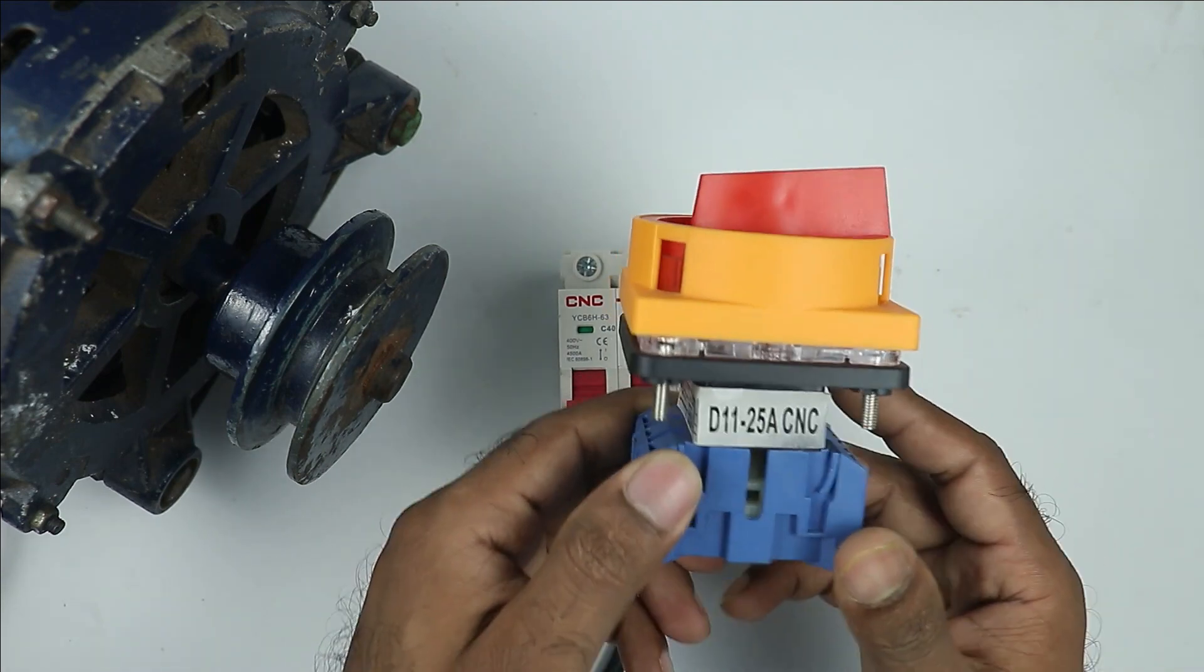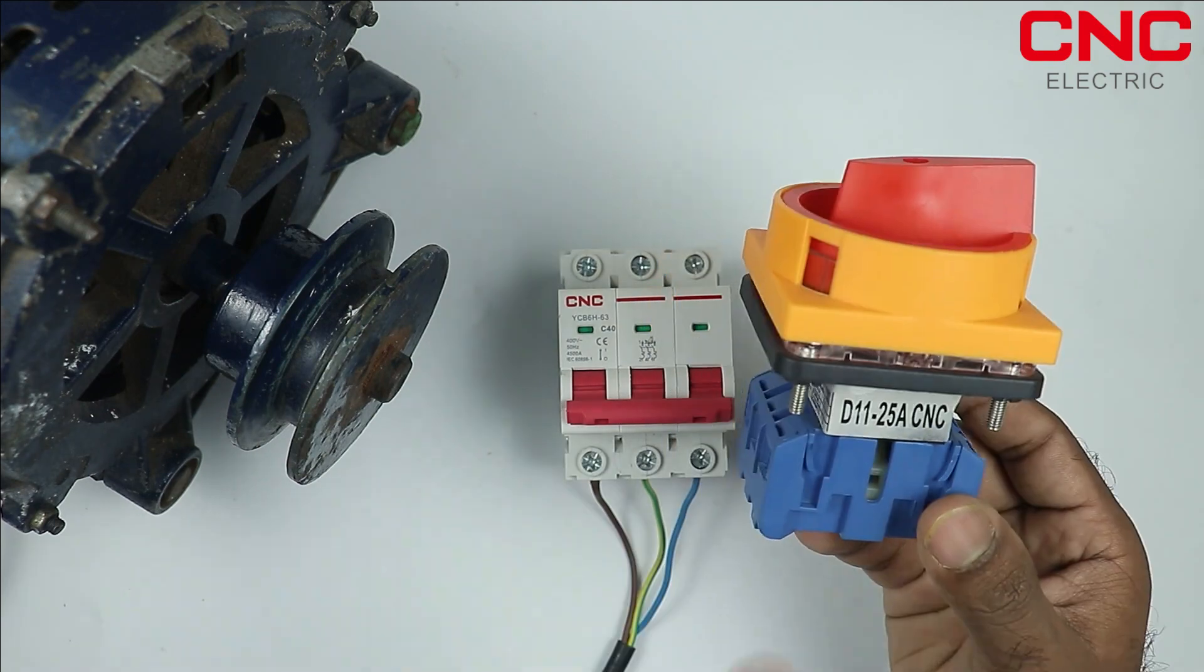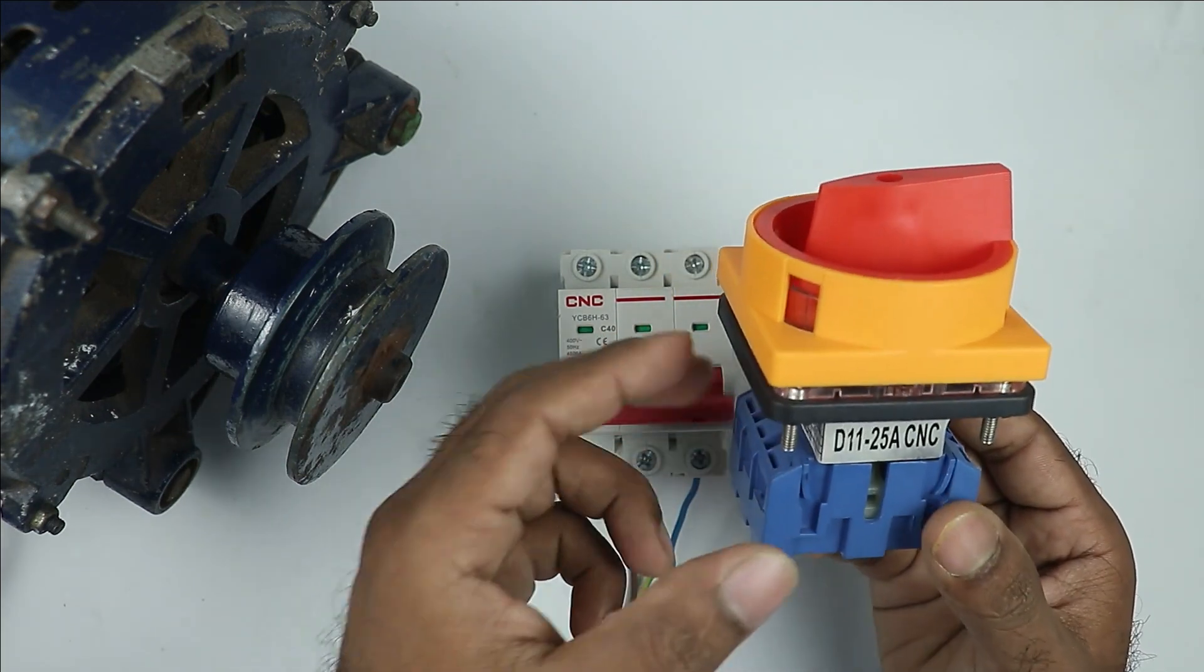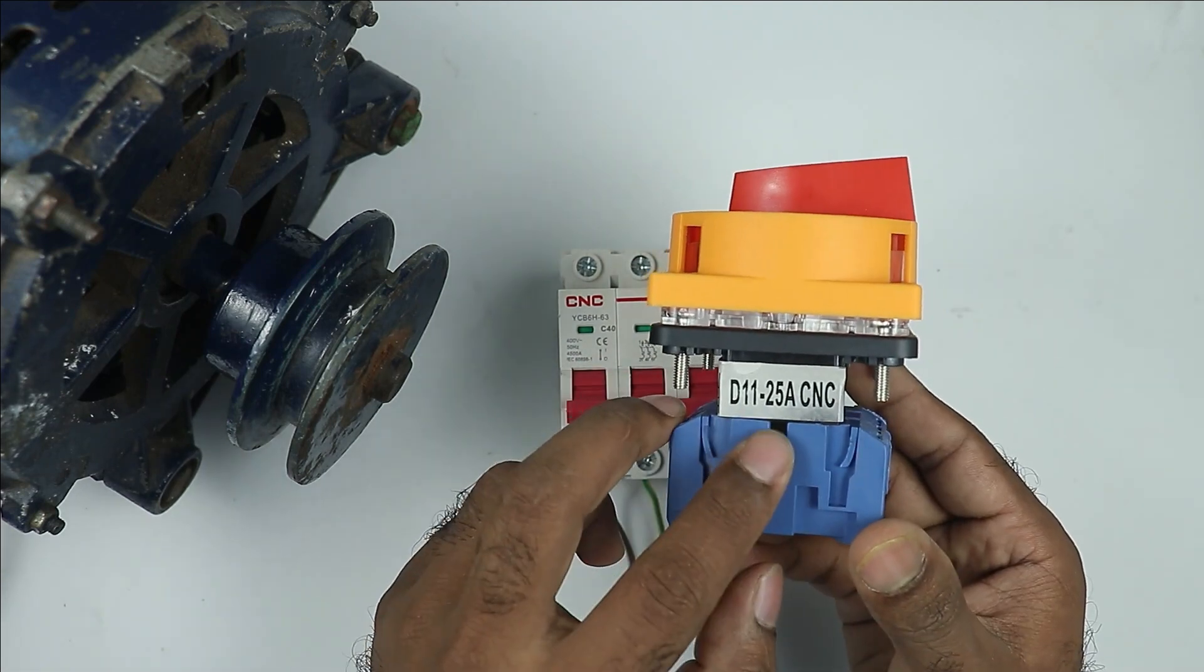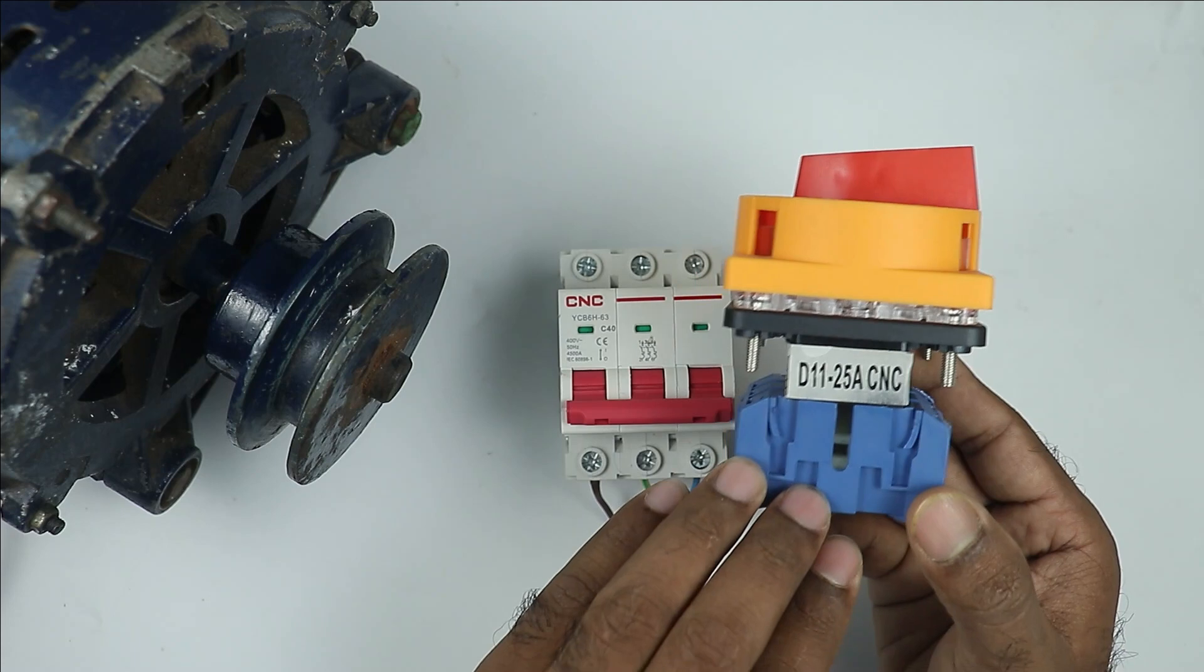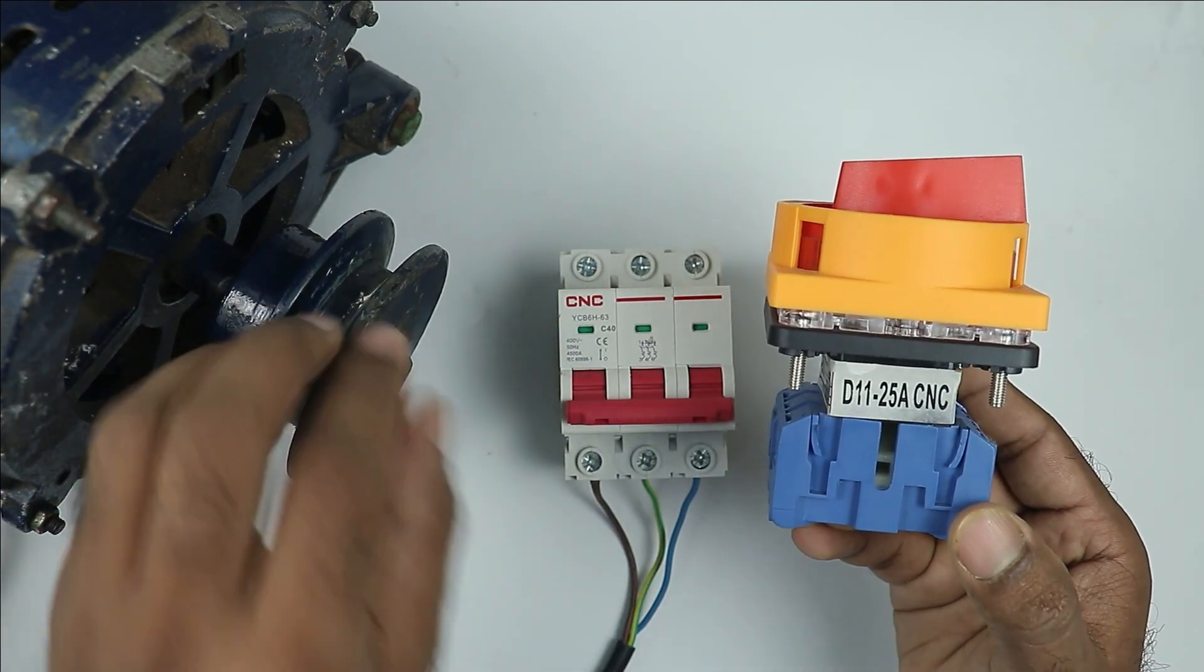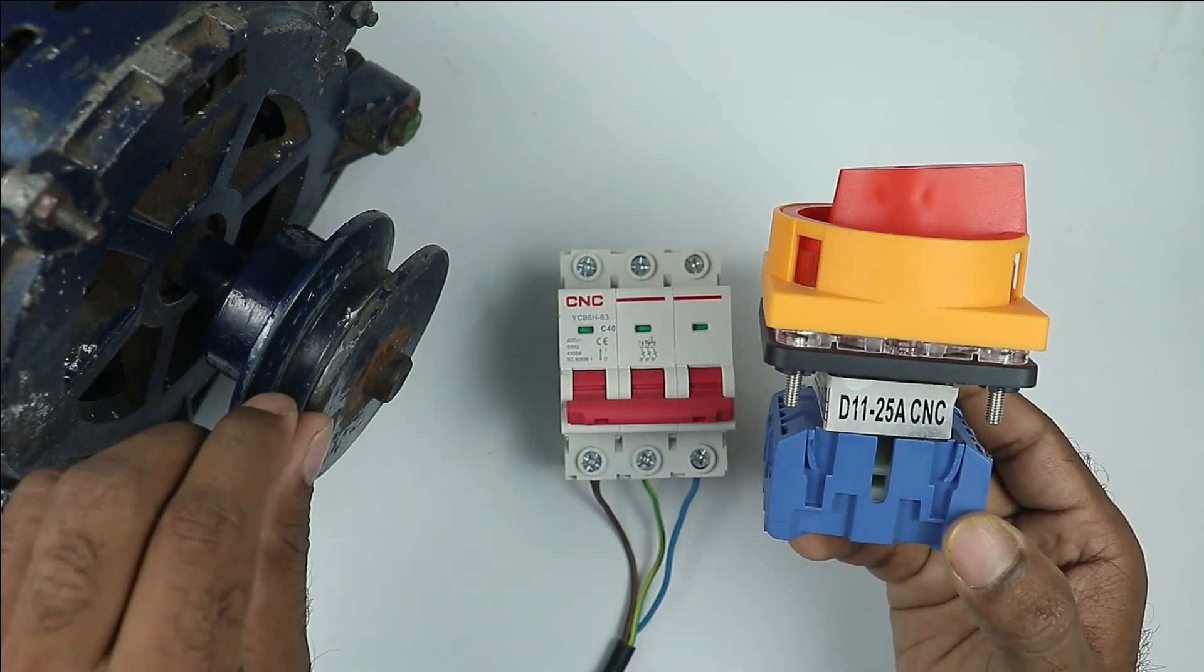This rotary switch I have now is manufactured by CNC company. You can see the model number here. Now, before using this rotary switch, you have to first check how much maximum current can flow through this switch. You can see here 25A is written. This means if the motor's maximum current rating is 25A, then you can use this switch.